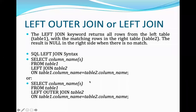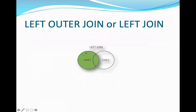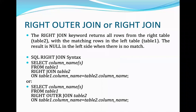In a left outer join, all data from the left table will always be in the output, but for the right table only data satisfying the condition will be retrieved. As you can see in the diagram, the intersection where the condition is satisfied retrieves data from table two, but all data is retrieved from table one. Right outer join is the opposite — it returns all rows from the right table with matching rows from the left table.